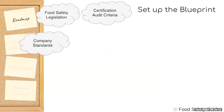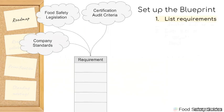I use something called a blueprint, and I'm going to introduce you to that and how it's generally made up. The first step is to list all the requirements. If it's the food safety code, I would start from the top and work my way to the bottom, section by section. You don't have to have just one column for this — you could have multiple columns so it's easier to navigate. I would also include my certification audit criteria and any company standards.